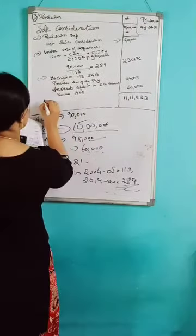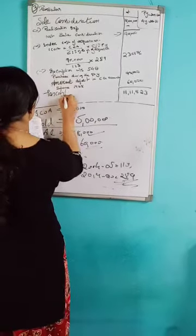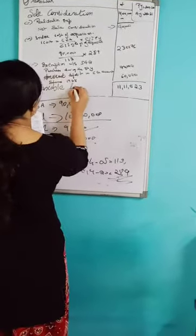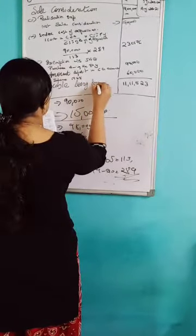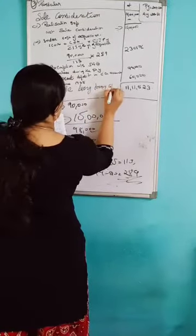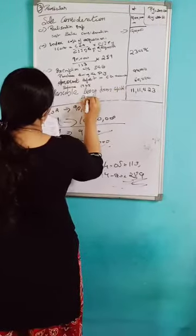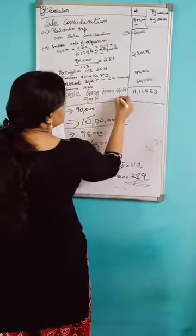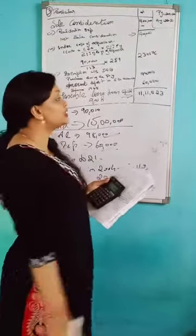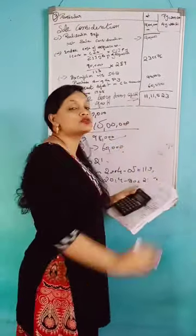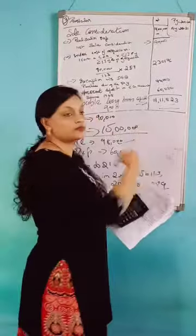After subtracting indexed cost of acquisition and exemptions under section 54B, the taxable long-term capital gain is Rs. 11,00,823.